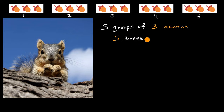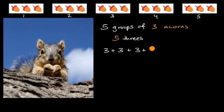Now, five threes — you could view this as five threes added together: three plus three plus three plus three plus three. And if you wanted to calculate this, you could skip count by three.